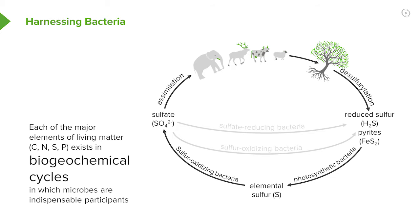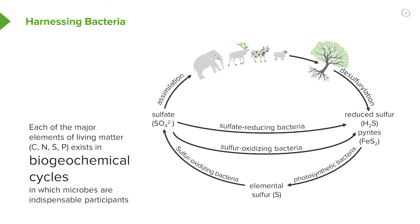You can see how sulfur is used and recycled over and over again by these bacteria. There are also bacteria called sulfate-reducing or sulfur-oxidizing bacteria that can cross from sulfate to reduced sulfur and pyrites. That's just one example of how bacteria are essential, indispensable participants in the global recycling of major elements on Earth.